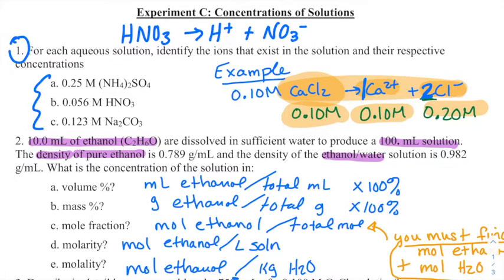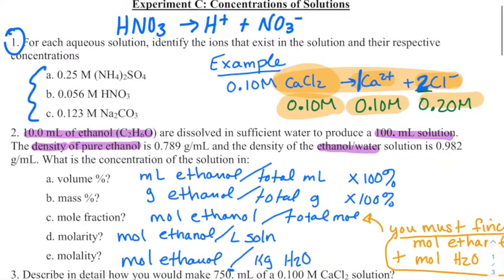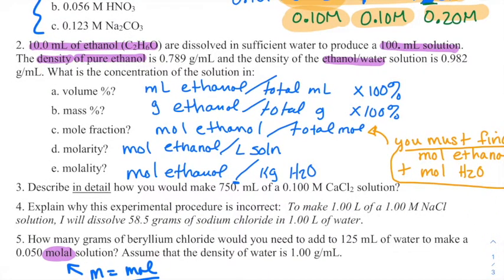Number two: you've got 10 milliliters of ethanol and you're dissolving it in sufficient water to produce 100 milliliters of solution. You're given the density of pure ethanol and the density of the ethanol-water mixture. Now you're going to convert the concentration into all of these. What I've written out here on the side is what you need for each one. For example, for volume percent you need the milliliters of ethanol divided by the total milliliters times 100. For the mass percent, it's going to be grams over total grams, and so on.